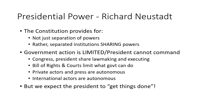Neustadt's work emphasized that American government is as much about shared powers as it is about separation of powers. Because of the checks and balances put into place by the framers, any president who wants to get things done has to gain the cooperation of other people in the system who have their own constitutionally based powers. Government action in general, and presidential action in particular, is limited. Congress and the president share the tasks of both legislating and executing the laws. The Bill of Rights and the judiciary place limits on what government can do. Private actors such as major corporations, religious institutions, social movements, and the press are autonomous.